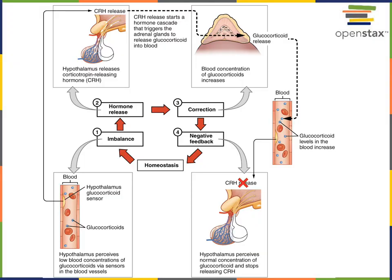A negative feedback homeostatic control mechanism regulates the production of glucocorticoid cortisol from the adrenal cortex. Cortisol binds to glucocorticoid receptors within hypothalamic cells and inhibits the release of CRH, leading to decreased ACTH production and thus decreased glucocorticoid production, maintaining stable homeostatic cortisol concentration. In response to stress, the hypothalamus increases CRH production, driving more ACTH and more glucocorticoid release, but once the stressor is removed, cortisol returns to its homeostatic baseline.